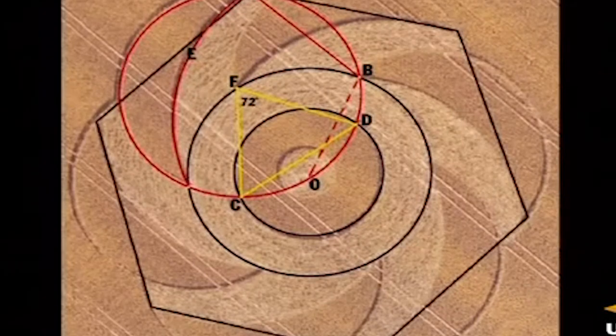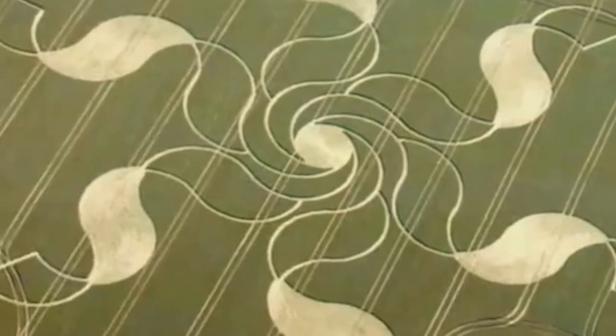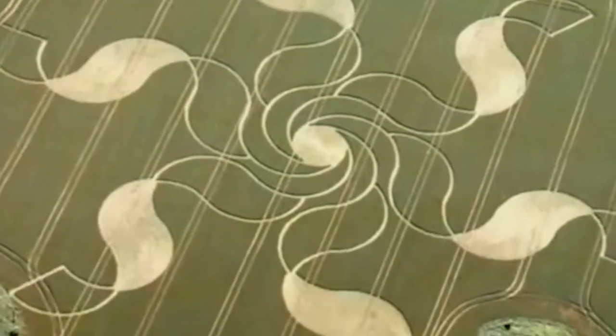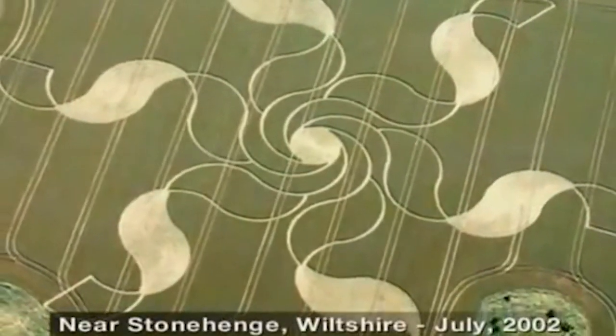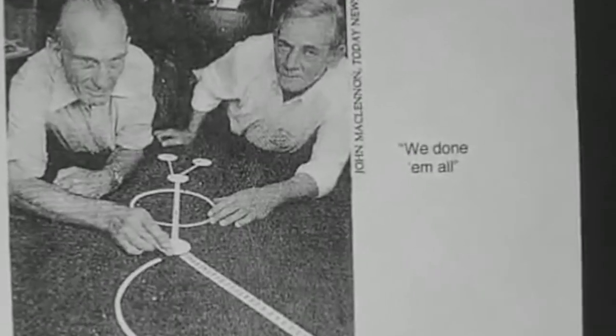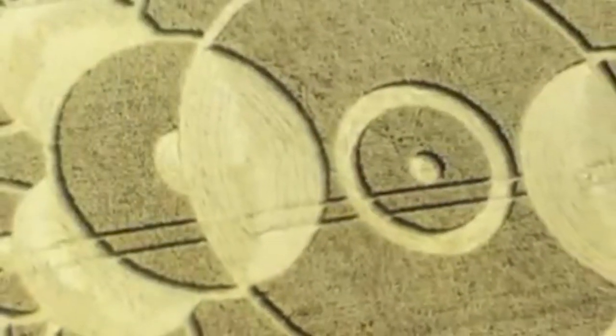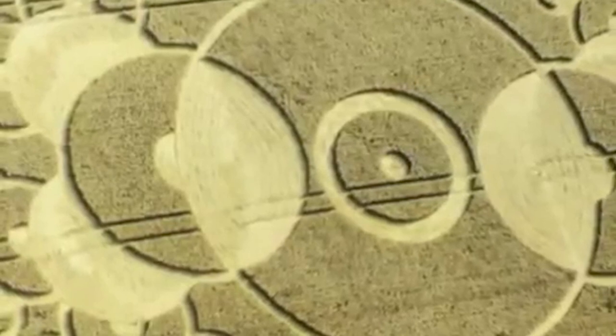In 1997, the Oxford English Dictionary recorded the earliest usage of the term crop circles in a 1988 issue of Journal of Meteorology, referring to a BBC film. The coining of the term crop circle is attributed to Colin Andrews in the late 1970s or early 1980s.